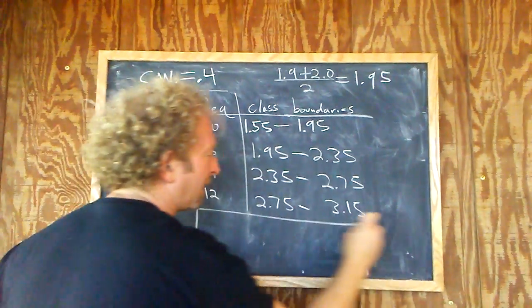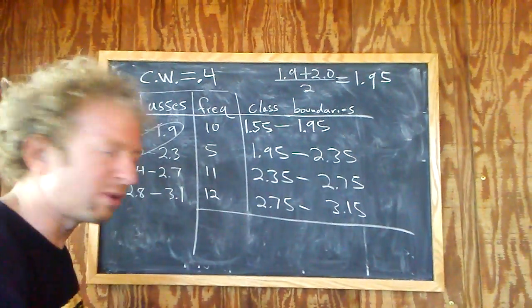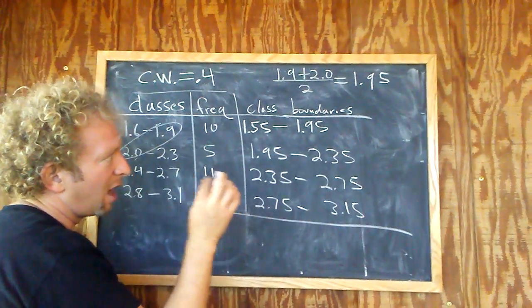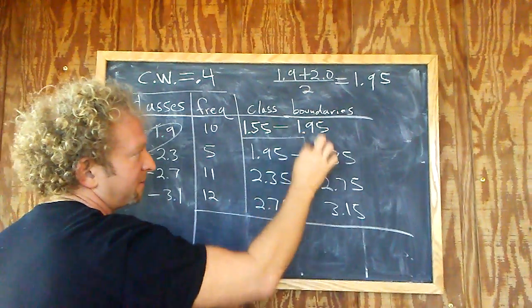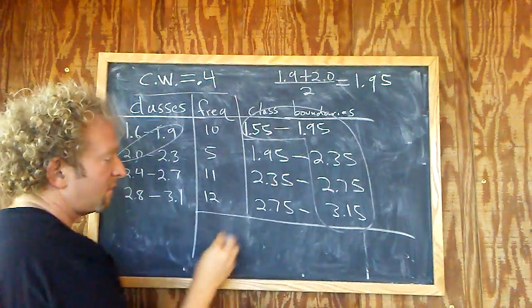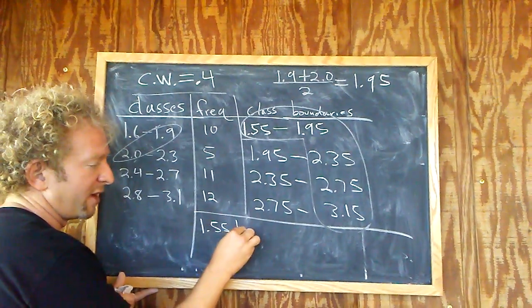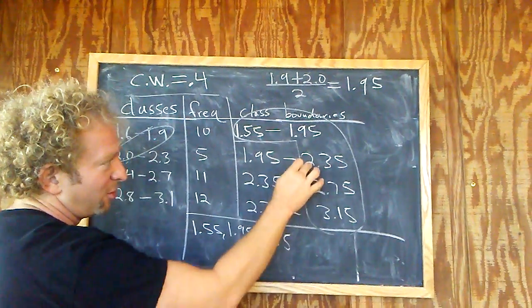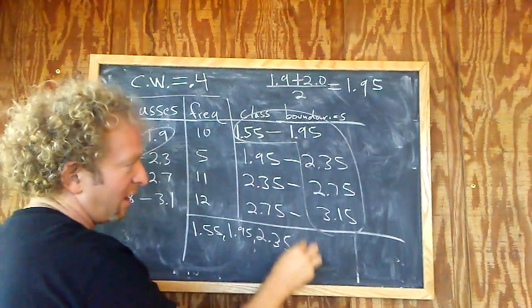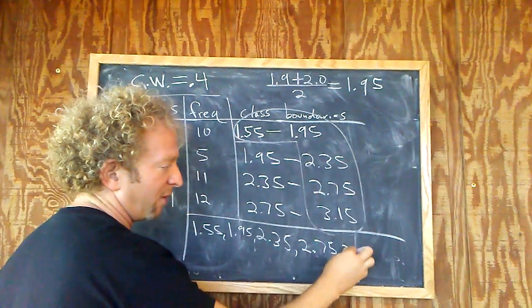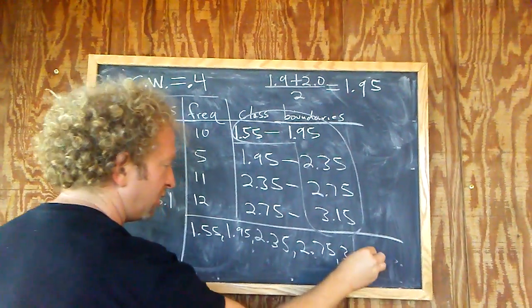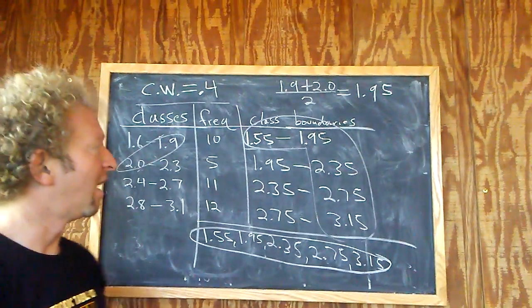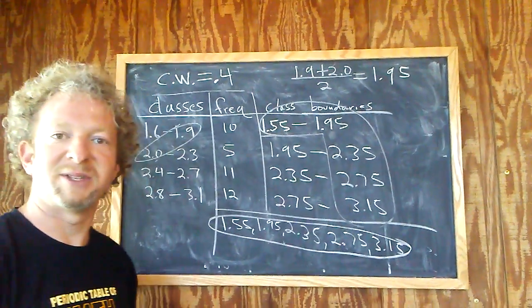Now, oftentimes, in a classroom setting where you have homework and stuff you have to do, they just want you to list the boundaries. So if you had to list the boundaries, you would just write these guys. So you would write 1.55, 1.95, 2.35. You only write them once. So you see how there's two 2.35s? You only write them once. 2.75, 3.15. So those would be the boundaries if you had to do it for a classroom or something like that. So I hope that made sense, and this always works every single time. So that's it.